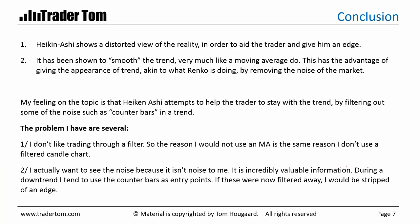For me, Heiken Ashi shows a distorted view of reality in order to aid the trader and give an edge. It has been shown to smooth the trend very much like a moving average does, and it has the advantage of giving the appearance of trend akin to what a Renko chart does, by removing the noise of the market. My feeling is that Heiken Ashi attempts to help the trader stay with the trend by filtering out noise such as counter bars. But the problem is: I don't like trading through a filter. The reason I would not use a moving average is the same reason I don't want to use a filtered candle chart. I actually do want to see the noise because to me it isn't noise — it's incredibly valuable information. During a downtrend I use counter bars as entry points to add to my position, and if these were filtered away, I would be stripped of that edge.